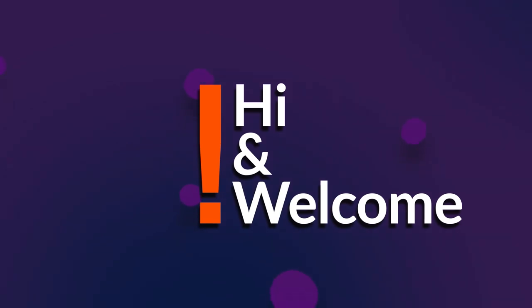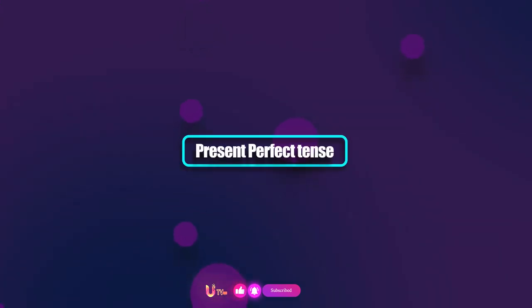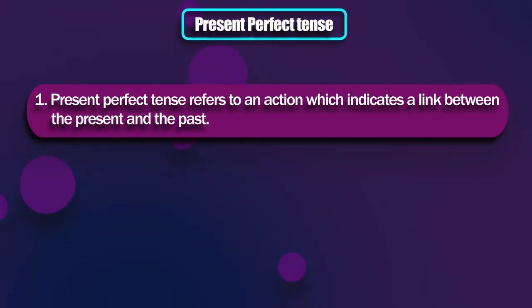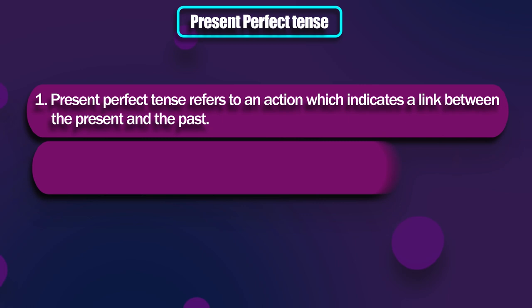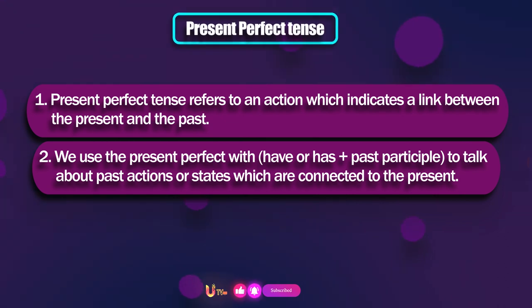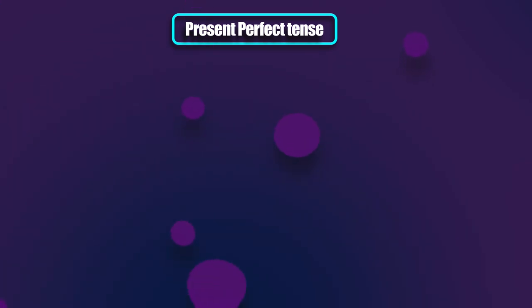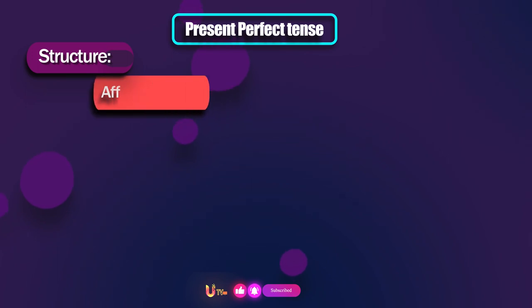Hi and welcome to this part of learning grammar. In this video we're going to take a look at present perfect tense. Present perfect tense refers to an action which indicates a link between the present and the past. We use the present perfect with auxiliary verb 'have' or 'has' plus past participle to talk about some actions or states which are connected to the present.